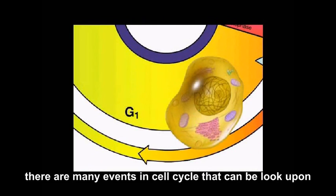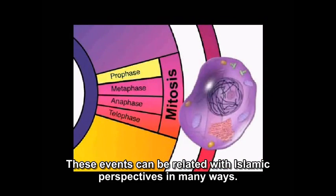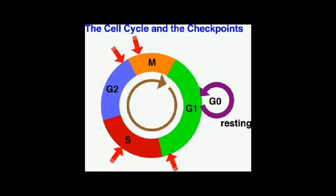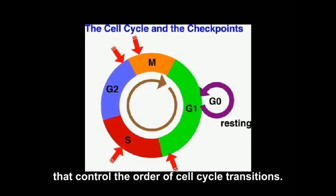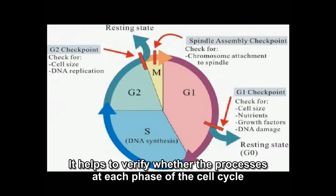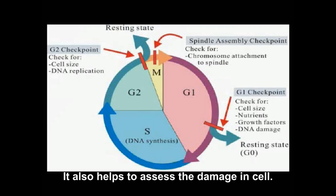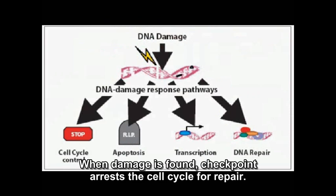There are many events in the cell cycle that can be related to Islamic perspectives in many ways. Firstly, cell cycle checkpoints are regulatory pathways that control the order of cell cycle transitions. They help to verify whether the processes at each phase of the cell cycle have been completed before progression into the next phase.